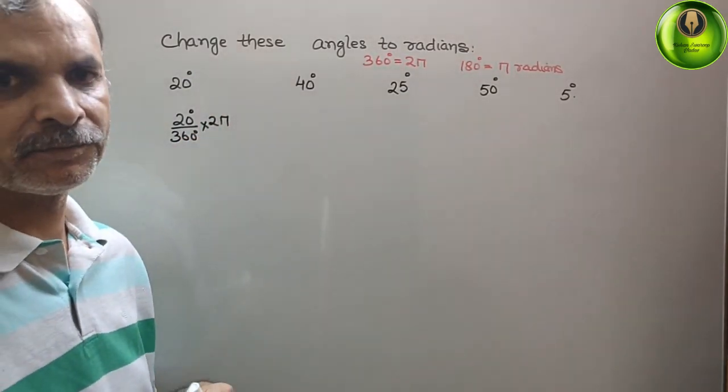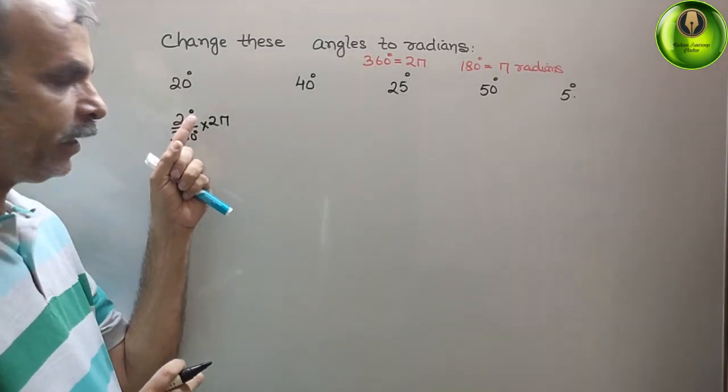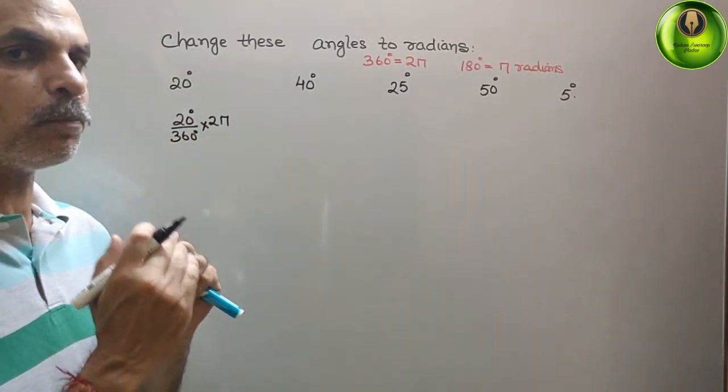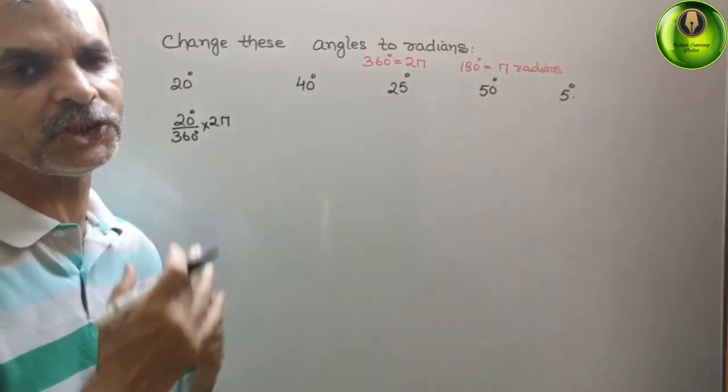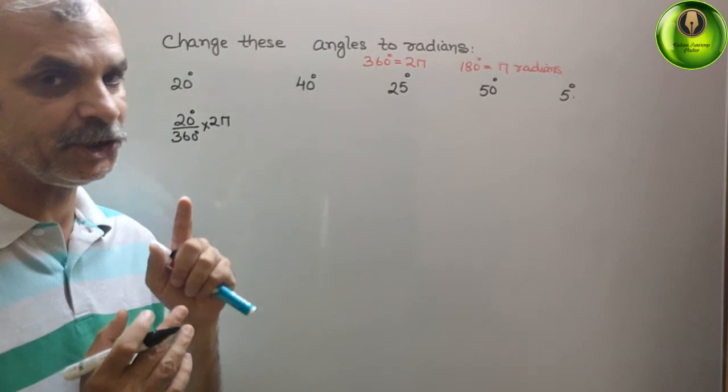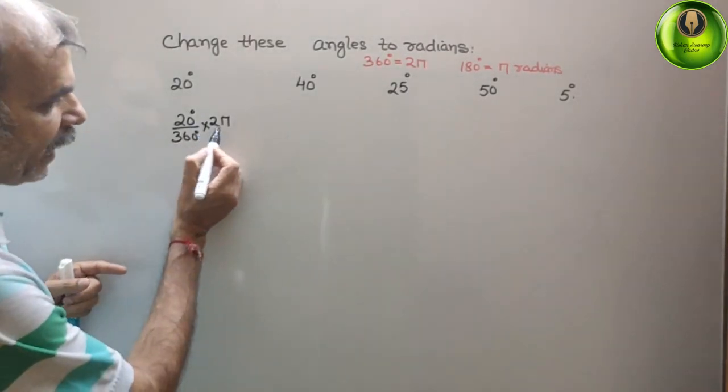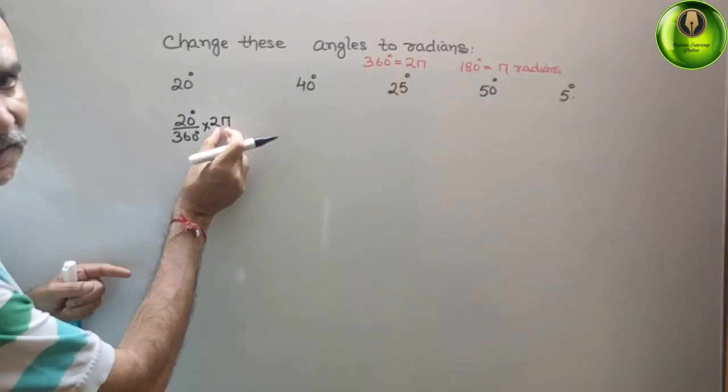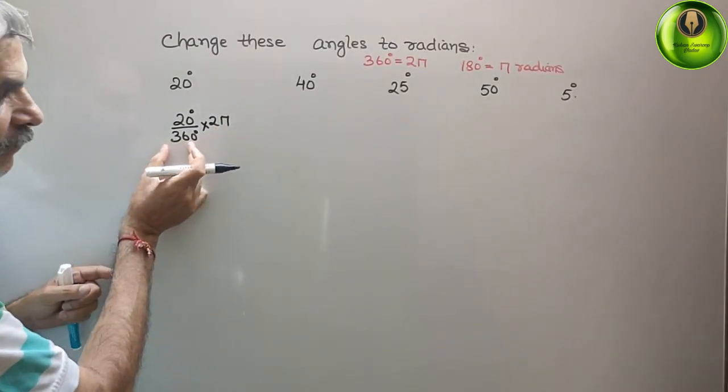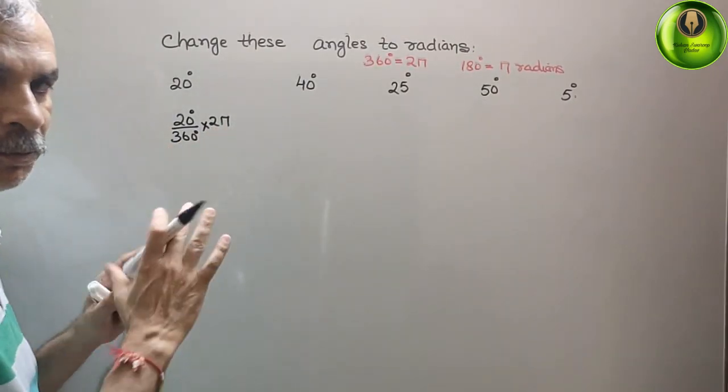Simple way is this: degree divided by 360 degree. That means we have to multiply and divide by 360 degree. If you multiply, here we will write in radians, they have asked in radians. And divide, we have to do in degree. Simple way.